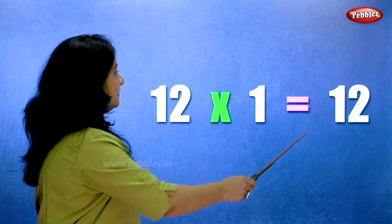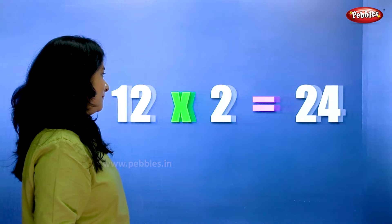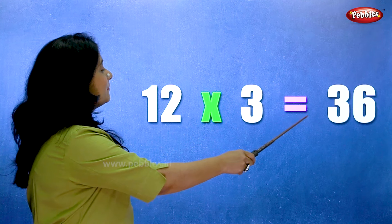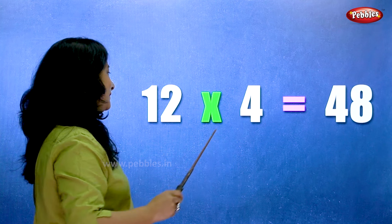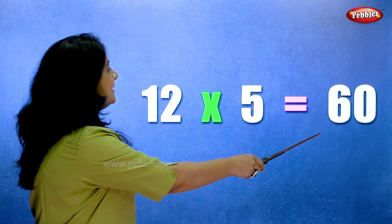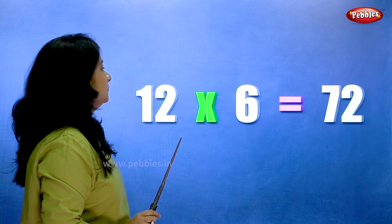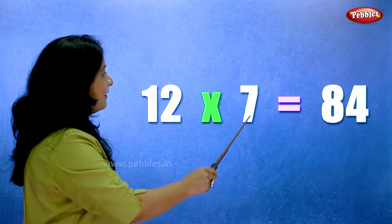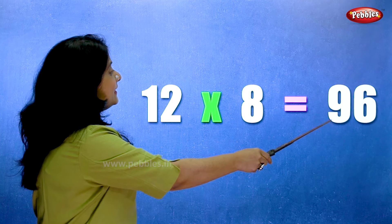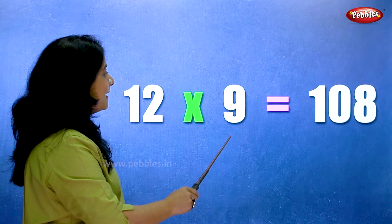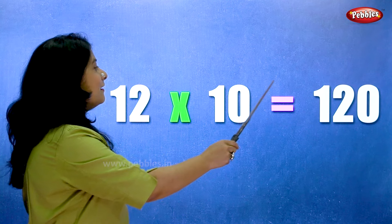Twelve ones are twelve. Twelve twos are twenty-four. Twelve threes are thirty-six. Twelve fours are forty-eight. Twelve fives are sixty. Twelve sixes are seventy-two. Twelve sevens are eighty-four. Twelve eights are ninety-six. Twelve nines are hundred and eight. Twelve tens are one-twenty.